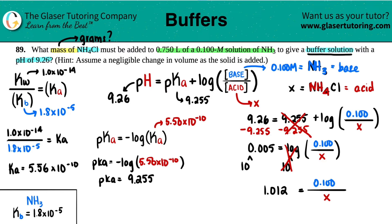Now let's solve for X. We can cross multiply: 1.012 times X equals 0.100. Divide both sides by 1.012. X equals 0.1 divided by 1.012, which is 0.0988. Since the base was in molarity, this has to be molarity of the conjugate acid. Keep in mind the conjugate acid is only NH4+.